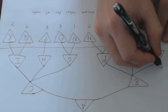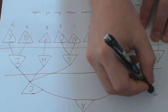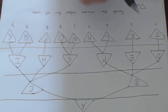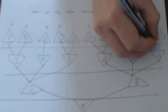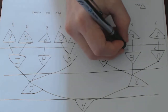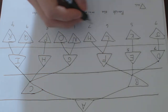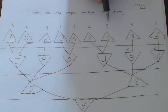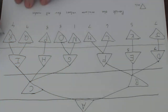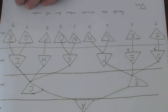Let's draw these levels. That goes to seven, six, seven — this is min, max, min, max.